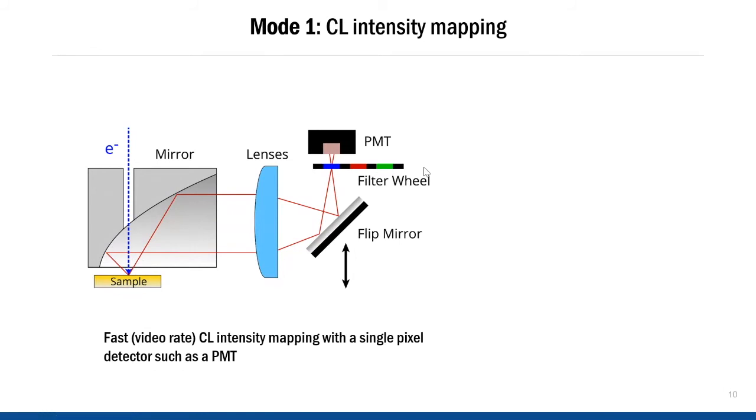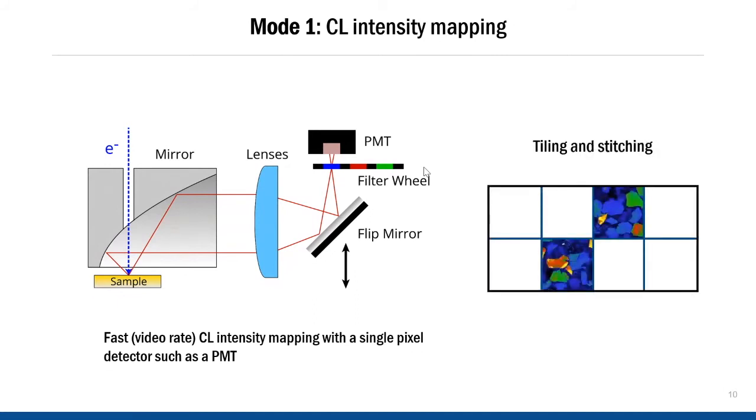The advantage of this mode is that it can be very fast. It's possible to use dwell times shorter than 10 microseconds per pixel, so you can do video rate imaging, have a live scan, and you can scan the sample very fast and decide what you would like to image in more detail because that's not always clear from the beginning. Another important feature of this mode is that you can scan a large field of view. With the electron beam, you can scan half a millimeter by half a millimeter, for example. And then by scanning the stage, you could build up an even larger image tile by tile. This is particularly nice for geological samples where the features can be quite large. You can image tiles in an automated manner and stitch them and have a very large area image.